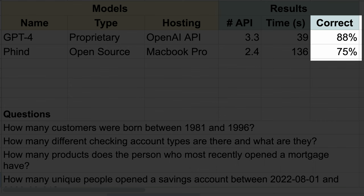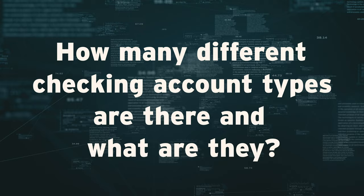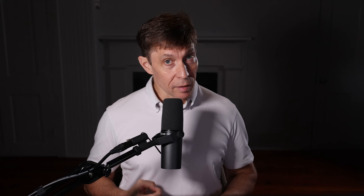Now let's look at the most important metric: how often the models correctly answer the question. At first glance, neither result is particularly exciting. However, a closer look at the questions and options for overcoming the problems tells a much different story. Let's start with GPT-4. It got only one question wrong on all three attempts. The question was: how many different checking account types are there and what are they? A closer inspection of the response reveals ambiguity around the word 'type.' When I slightly reworded the question, which is what I would do as a user, it gave me the right answer. So in practice, GPT-4 is closer to 100%.